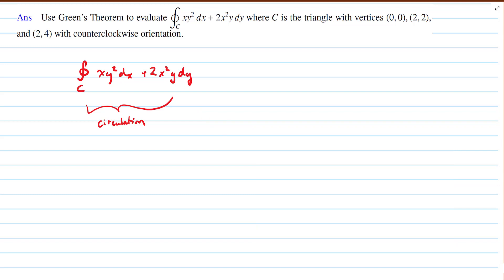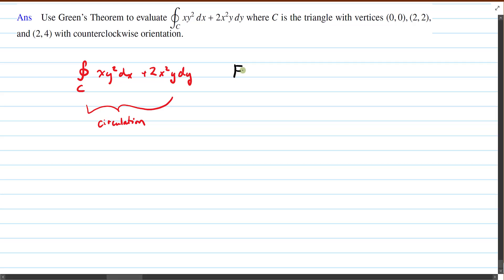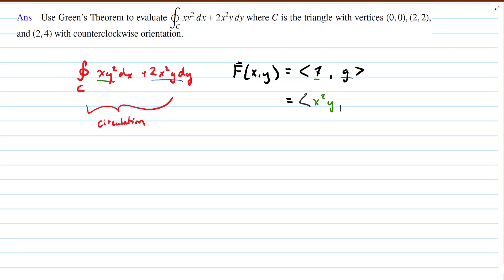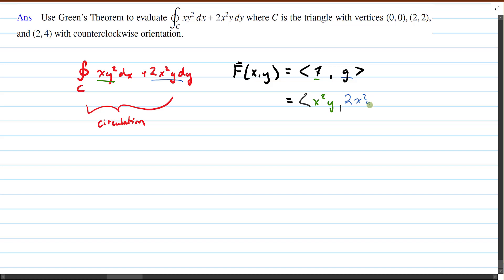Regardless of how we evaluate this, we have to identify the vector field from which this problem came. Our vector field is F(x,y), and it has two component functions, f and g. We get the f component function from this first portion. So our f component function is xy². And our g component function we get from the second term here. So that is 2x²y.